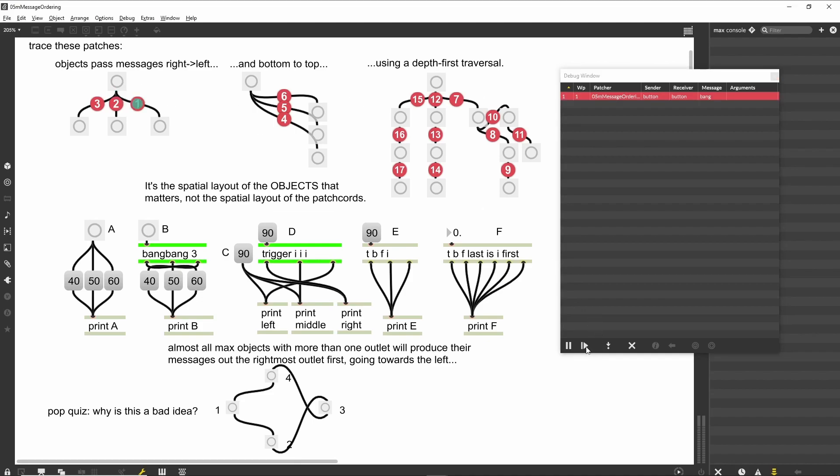Click on the topmost button in the left-hand patch. Instead of the immediate flash of all the button objects lighting up, the rightmost patch cord shows a message path indicator, an animated green circle. In addition, a window opens called the debug window.